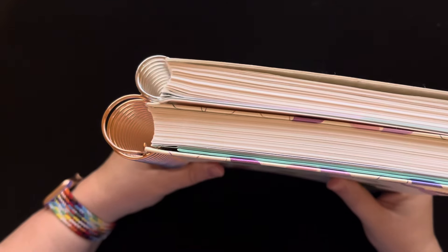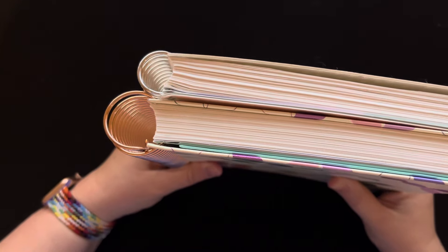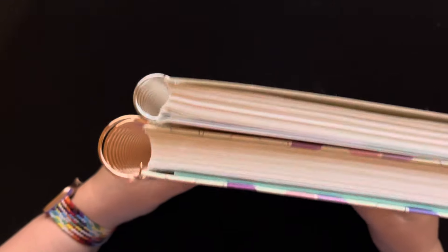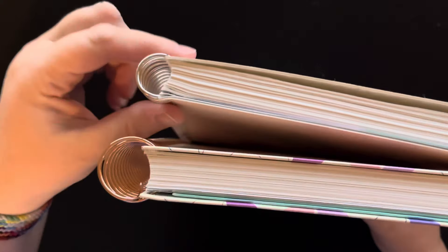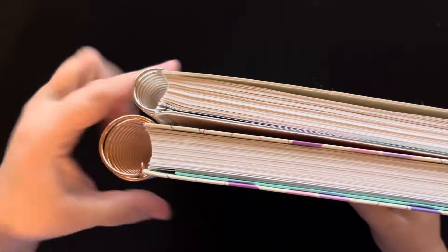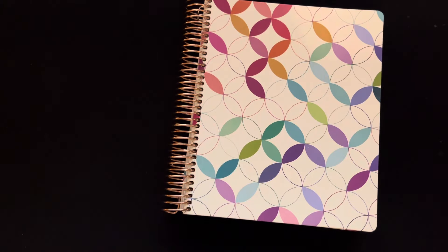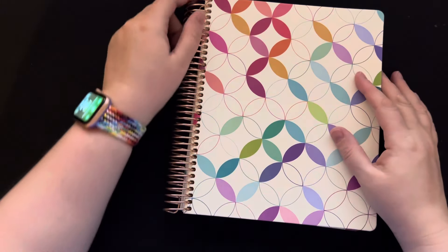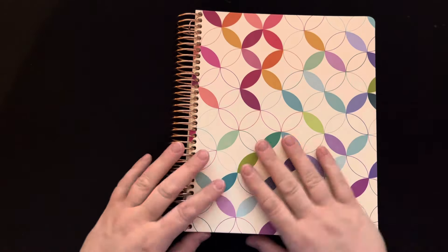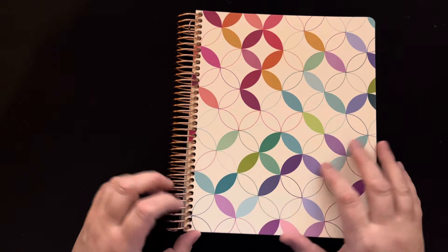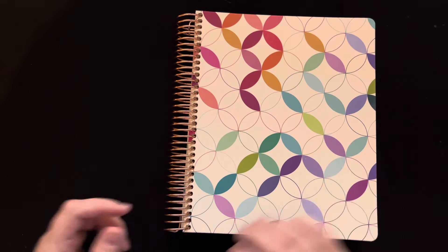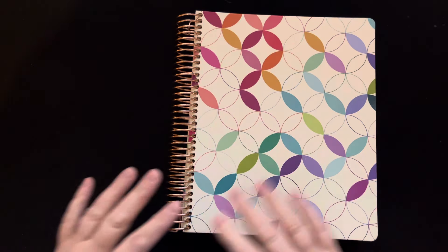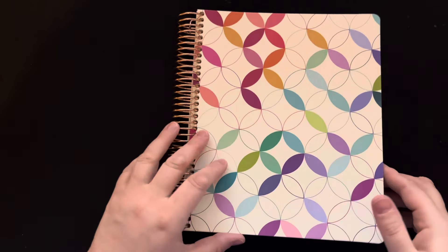So I love Erin Condren, have for several years now, but I am not a fan of the 7x9 regular coil. Any chance I get, I use a slimmer coil. But it did come in this rose gold, so I'm cheap and I never get anything other than the silver coil that comes with the planner. But this one did come in the rose gold, which is kind of cool. It's a different vibe and it looks nice with the mid-century circles.